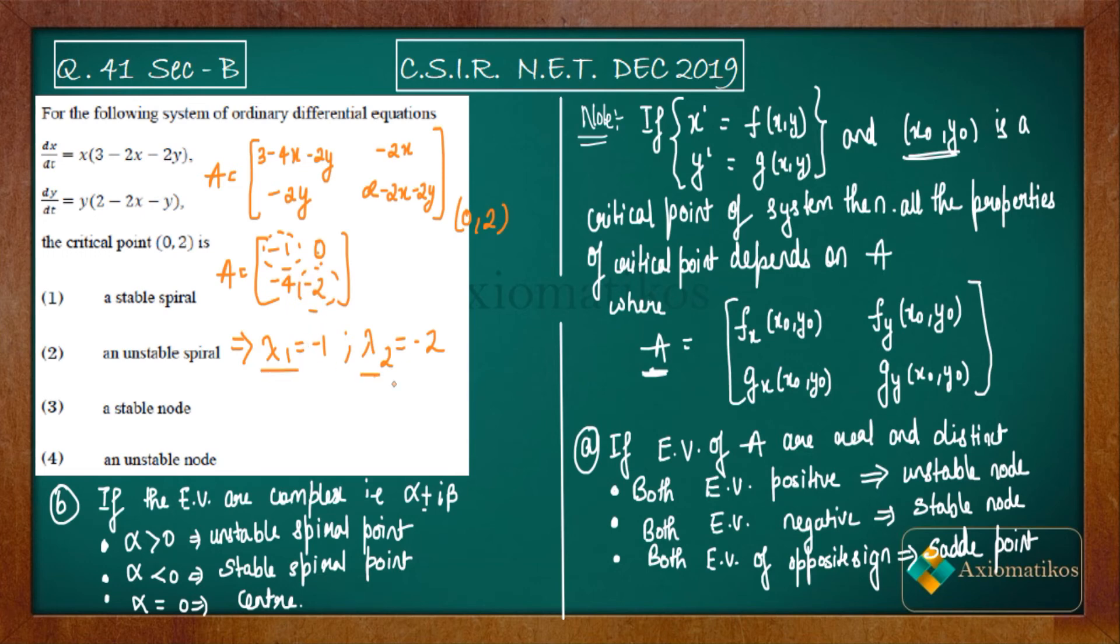Now because these two eigenvalues are real, they are distinct, and also both eigenvalues are negative, therefore you should get a stable node as your answer. So third is correct, second is incorrect, one is incorrect, and fourth is incorrect. So this is how one can approach this problem.